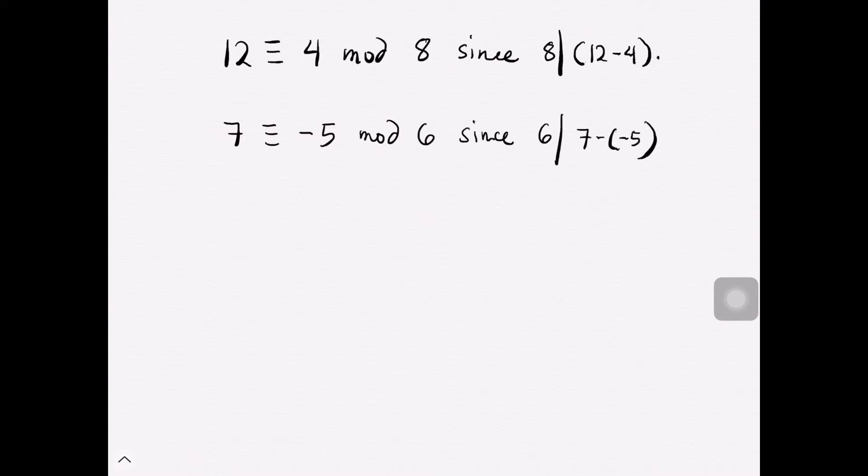With the same idea, negative 3 is congruent to negative 23 modulo 10, knowing that 10 divides the difference of negative 3 and negative 23.